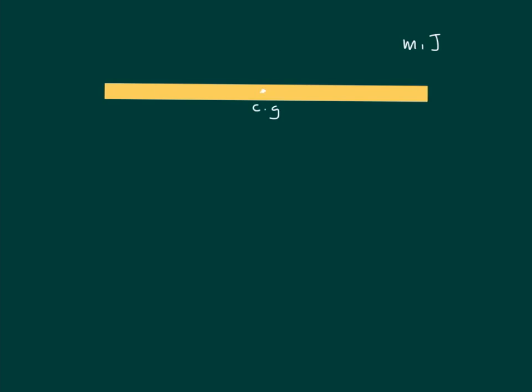Let's look at an example of a rotating beam. This is a uniform beam having mass m and second mass moment of inertia J. Because the beam is uniform, the center of gravity is exactly at the middle. If the center of rotation is not at the middle but somewhere else, and the beam rotates with rotational displacement theta, the kinetic energy from rotation is straightforwardly half J theta-dot squared.